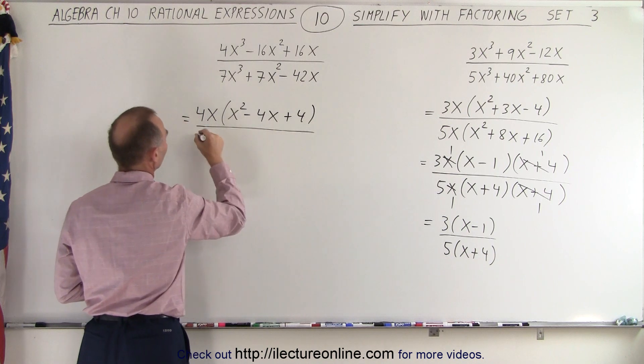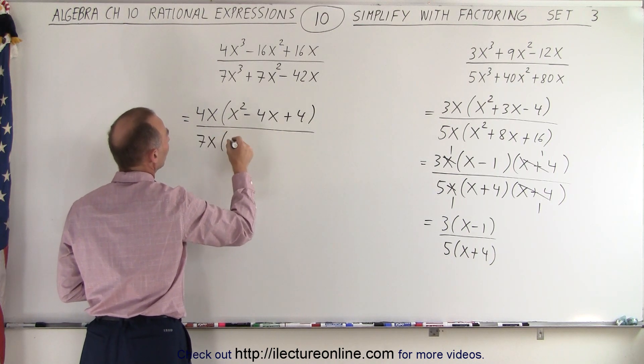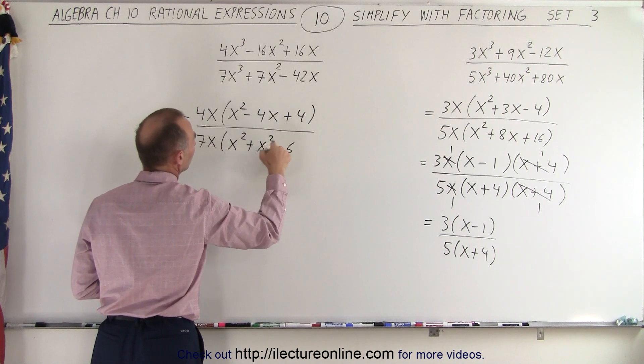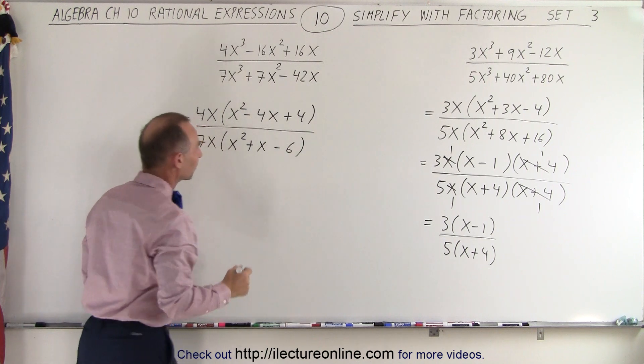In the denominator, we can factor out a 7x. We're left with x squared plus x minus 6. All right, now we can factor the numerator and denominator even further.